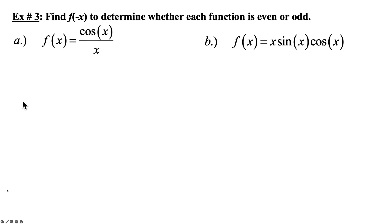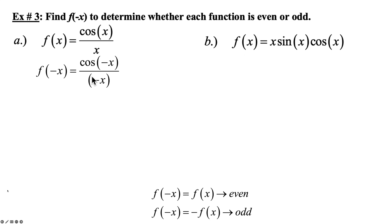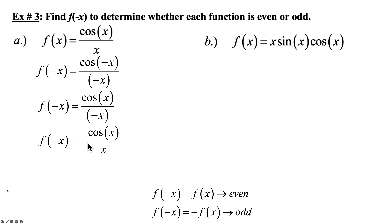Example 3: find f of negative x to determine whether the function is even or odd. If f of negative x equals f of x, it's an even function, just like cosine and secant. If the negative inside the function comes out in front, then it's odd. For part A, put negative x in all three spots and simplify. Cosine of negative x is still cosine of x. So the negative on x goes to the front, and cosine of x over x is your original f of x. This equals negative f of x, so we have an odd function.